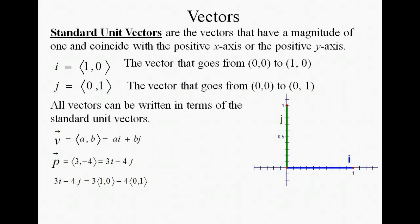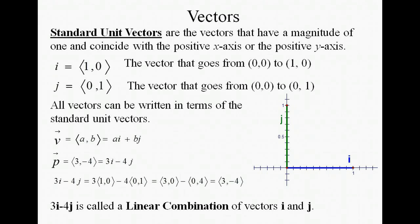Let's see how this works. Let's replace i with its vector form (1,0), and j with its vector form (0,1). Then we have scalar multiplications of 3 and 4. So that gives us the vector (3,0), and we're going to subtract the vector (0,4). So we end up with the vector (3,-4), which is what we started with. So 3i - 4j is just called the linear combination of the vector.